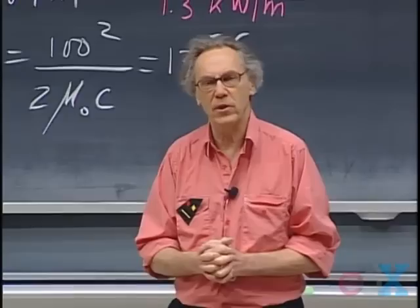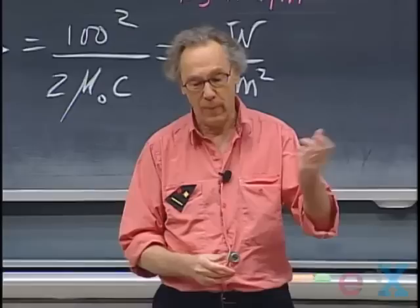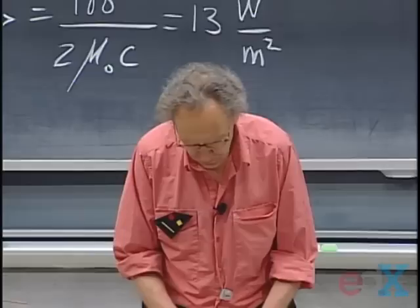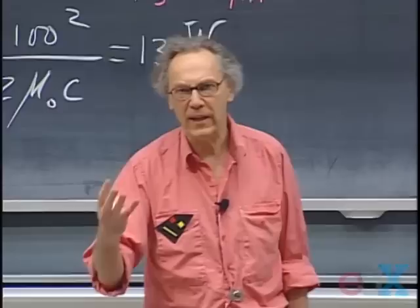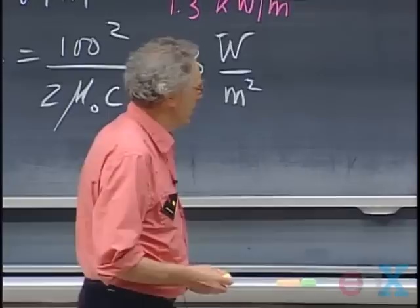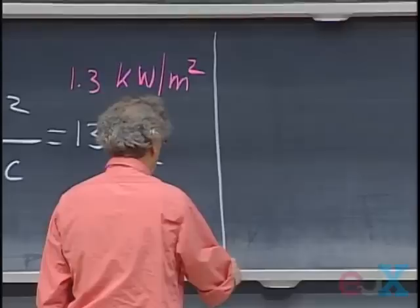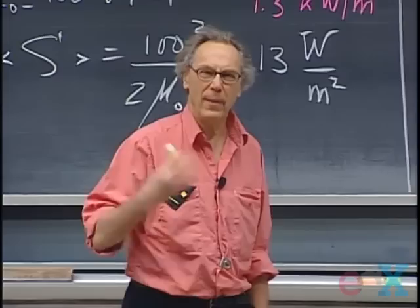I want to discuss what these waves look like and take a closer look at how electromagnetic waves are produced by charges that we accelerate. Key in the whole process is that you accelerate a charge. If a charge is moving at constant velocity it will not produce electromagnetic radiation. I want to give you a classical physical feeling — not a quantum mechanical treatment — on how these waves are produced.